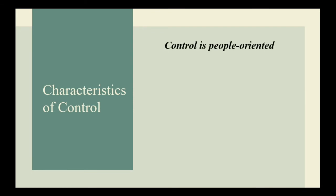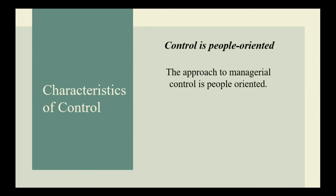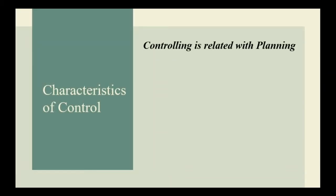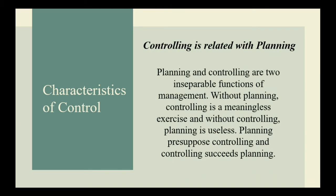A good system of control facilitates timely actions so that there is minimum waste of money, time, and energy. Sixth, control is people-oriented: the approach to managerial control is people-oriented. Control is attained through people and not through things — it is people who exercise control. Lastly, controlling is related with planning: planning and controlling are two inseparable functions of management. Without planning, controlling is a meaningless exercise, and without controlling, planning is useless. Planning presupposes controlling and controlling succeeds planning.